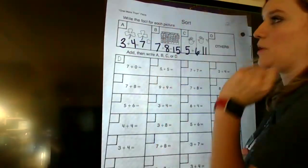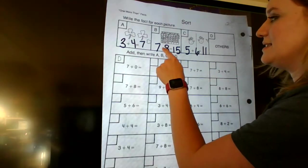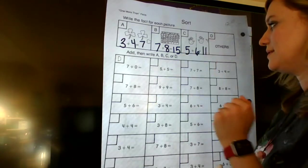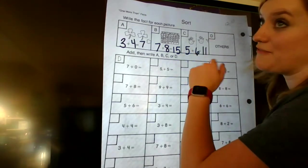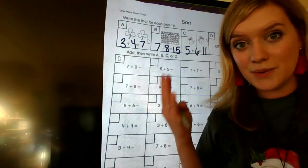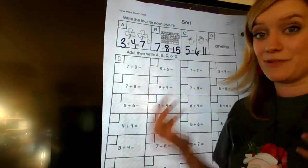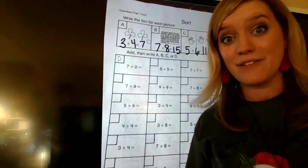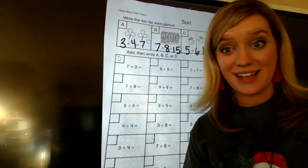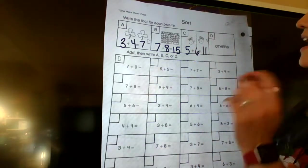So we just did pretty much 3 plus 3, which is 6, plus one more, 7. 7 plus 8. Oh, that's like 7 plus 7, which is 14, plus 1, 15. 5 plus 6. So we did 5 plus 5, which is 10, plus 1, which is 11. So you take that double. I know it says 7 plus 8. But if I know 7 plus 7, and then I just have to add one more, why wouldn't you want to do it faster, right?